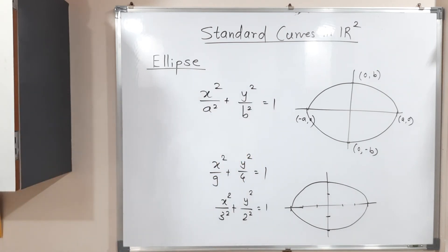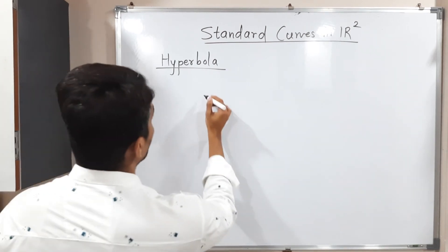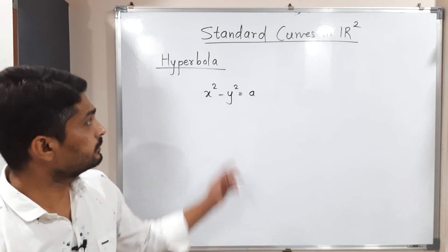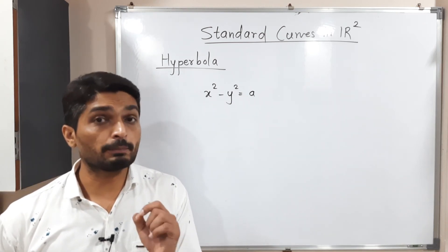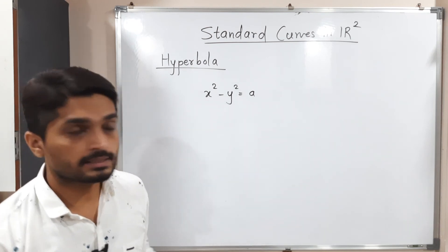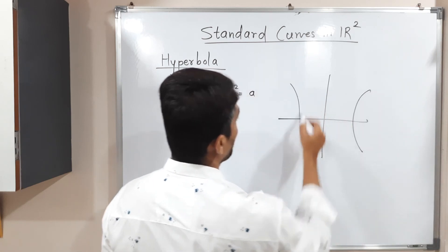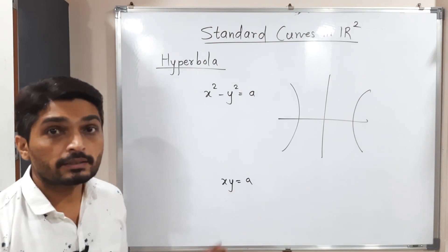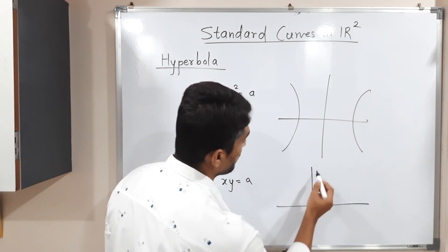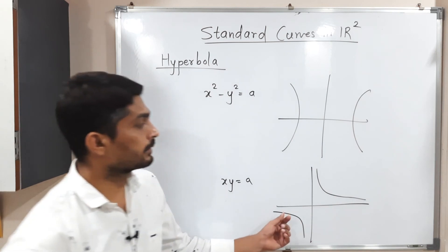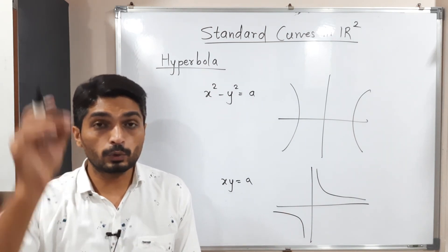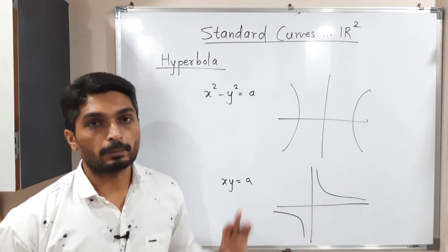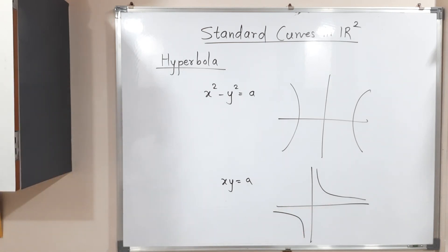Let us discuss hyperbola. The standard equation is x² − y² = a². Note the minus sign — in circles and ellipses we always have a plus sign between x² and y², but here we have a minus sign, so it is a hyperbola. There is one more standard hyperbola: xy = a, which we call a rectangular hyperbola. By finding a few points on the hyperbola, we can easily draw its diagram.